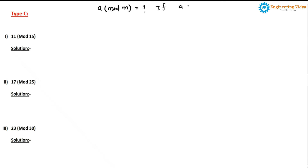If a is less than m, then a mod m can be written simply as a. Make sure: if the first operand is less than the second operand, then the first operand will be the result of a mod m. If the first operand is not less than m, then it is considered a type A problem and we divide a by m — whatever remainder comes, that is the result. But when the first operand is less, no need to go through the division process.